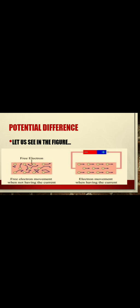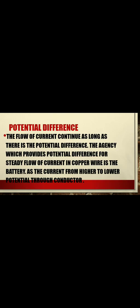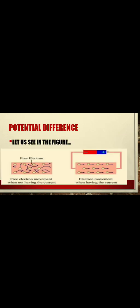There are two types of current. If we suppose there are positive charges instead of negative charges, that type of current is known as conventional current. As the positive charges move from the positive terminal towards the negative terminal of the battery — that is, from high potential towards lower potential — that type of current is known as conventional current.